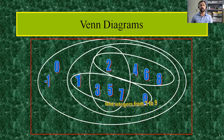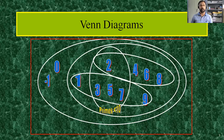This one represents odd integers from one to nine: one, three, five, seven, nine. One more set represents the primes less than 10. So instead of writing A equal to B in roster form or set builder form, this is a diagrammatic pictorial representation of sets known as Venn diagrams. You can see that two is common in most of the sets.